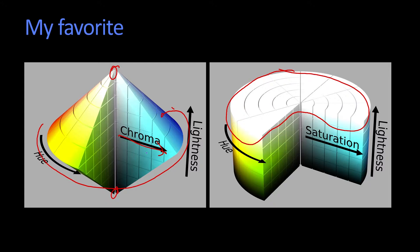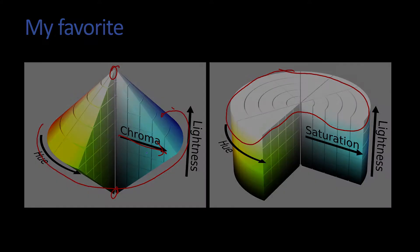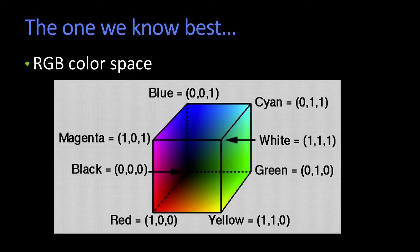Now, of course, what is the color space that we all know and love, or at least know? Which is the one we know best? Well, it's the RGB space.